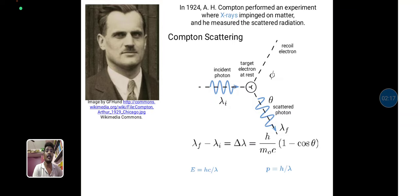In Compton effect, the first Compton effect derived from Compton in 1924. He performed an experiment where the x-rays impinged on matter and he measured the scattered radiation. The target electron at the rest position. When we pass through the incident photon lambda i, it falls on the target electron at rest positions. It is diffracted from the recoiling electron and scattering emission.